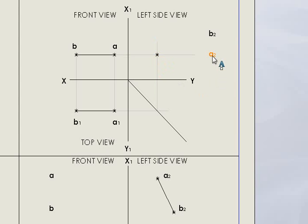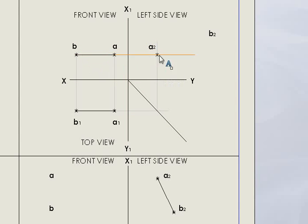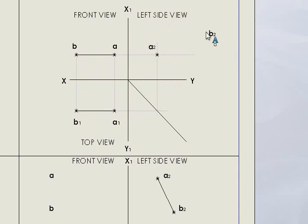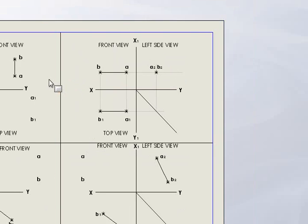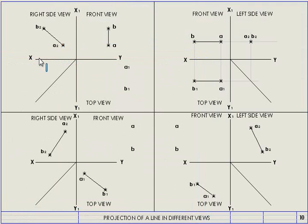We're going to follow up with A — project A across and down, across and up, which means it falls on that point. I'm going to label it A2. How about B2? B2 across, down, across, and up — B2 is directly behind A2 in the left side view. I'm going to label it A2 and B2.